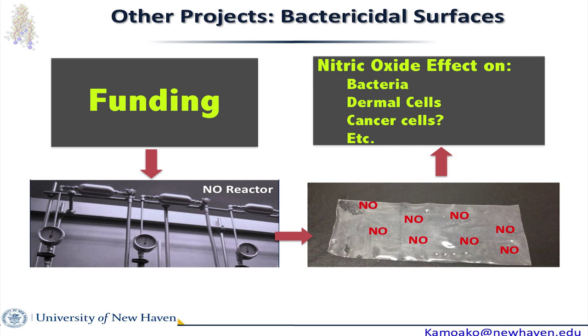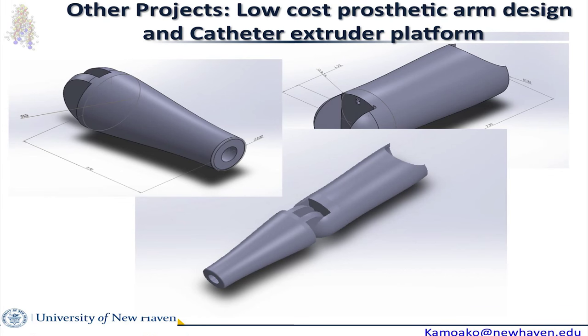Another project one of my students is working on — a baby project of mine — is making a prosthetic arm that costs a hundred dollars. It's a lofty goal, but prosthetic arms on the market literally cost an arm and a leg. If you can make something cheap and functional that can be used for daily routine tasks, it would have a bigger widespread impact compared to the motorized electronic arms that only a few can afford.